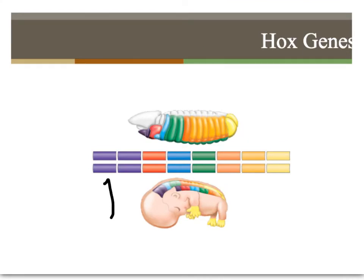We have different genes located in different regions that control the pattern of development for the head region, and we have different genes down here that are controlling patterns of development in the tail region.